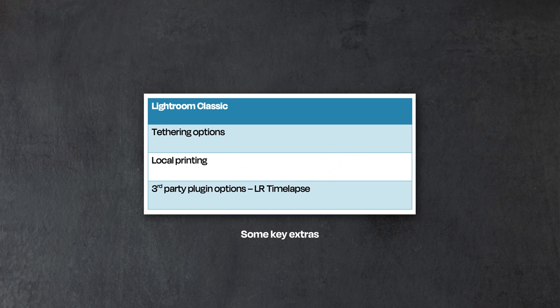Last of all, there are a couple of extra features in Lightroom Classic that you won't find in Lightroom — things like tethering your camera directly into Lightroom Classic, local printing, and third-party plugins, which are far more available in Classic. I personally use LR Timelapse all the time, which requires a plugin to process time-lapse sequences and can only be used in Lightroom Classic. Those are the main differences — I hope this video has made it clearer which one you should use. I'm TK North, happy editing — see you soon!